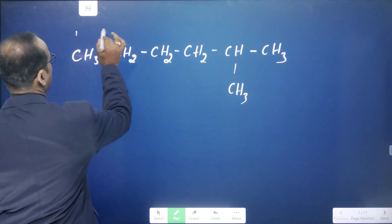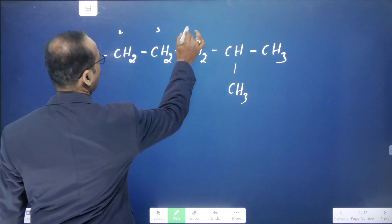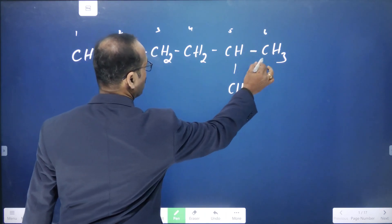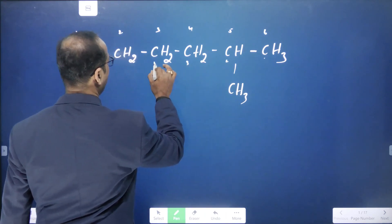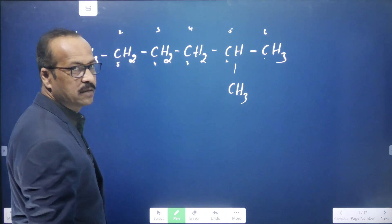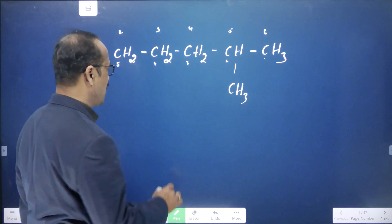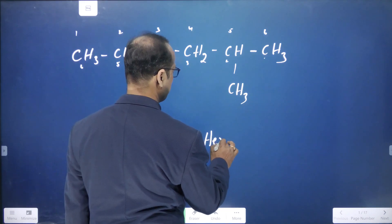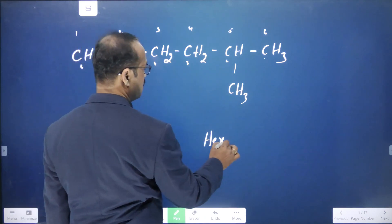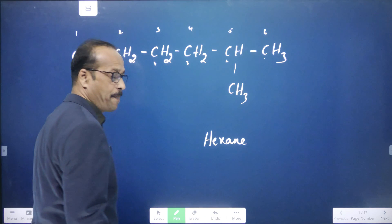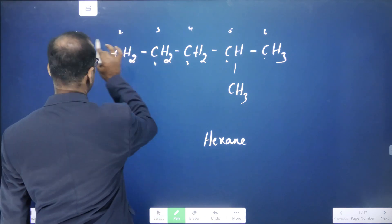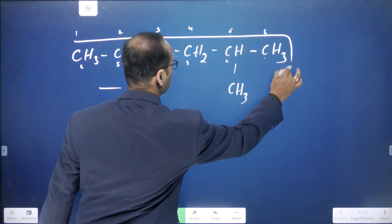What is the first rule? First, select the longest chain. The longest chain is 1, 2, 3, 4, 5, 6 — if you count from either end, you get 6 carbons. Six carbons is hex, so write hex. With all single bonds between carbons, that is hexane.